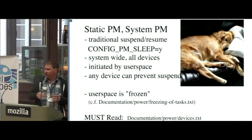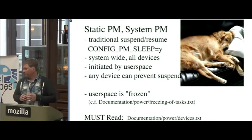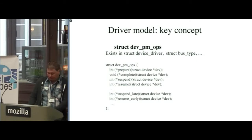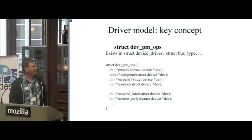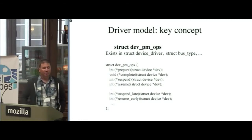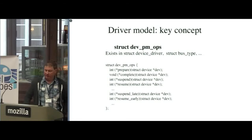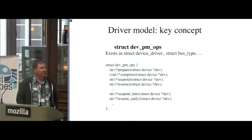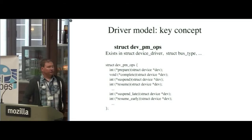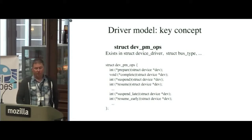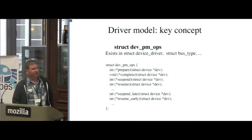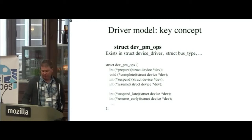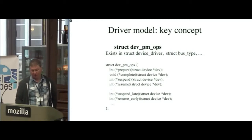Please interrupt or ask questions whenever you want. In the driver model, the dev_pm_ops structure is really important for how power management integrates into the driver model. It's just a structure full of function pointers, and this is part of every struct device_driver. It's also part of all the bus types in the kernel as well. We'll refer back to this as we go and cover how to implement these various hooks along the way.